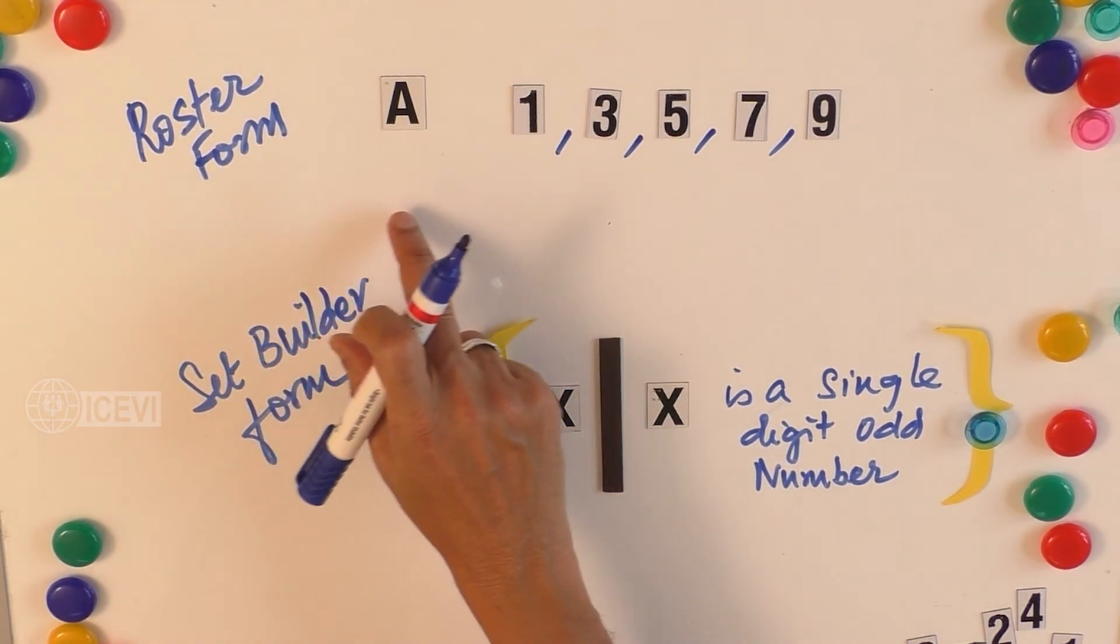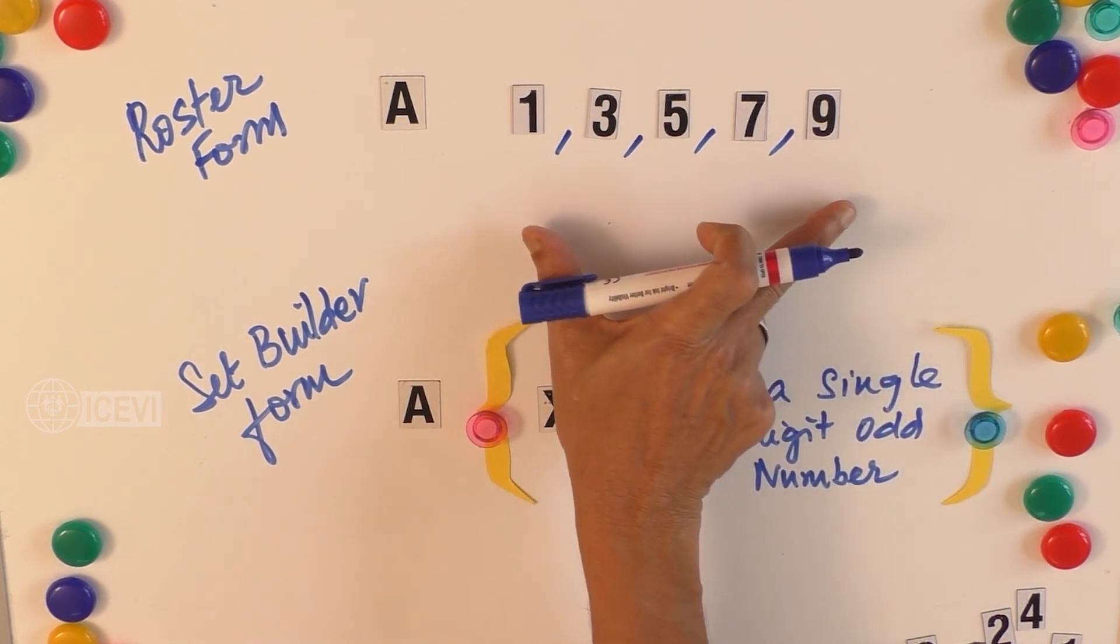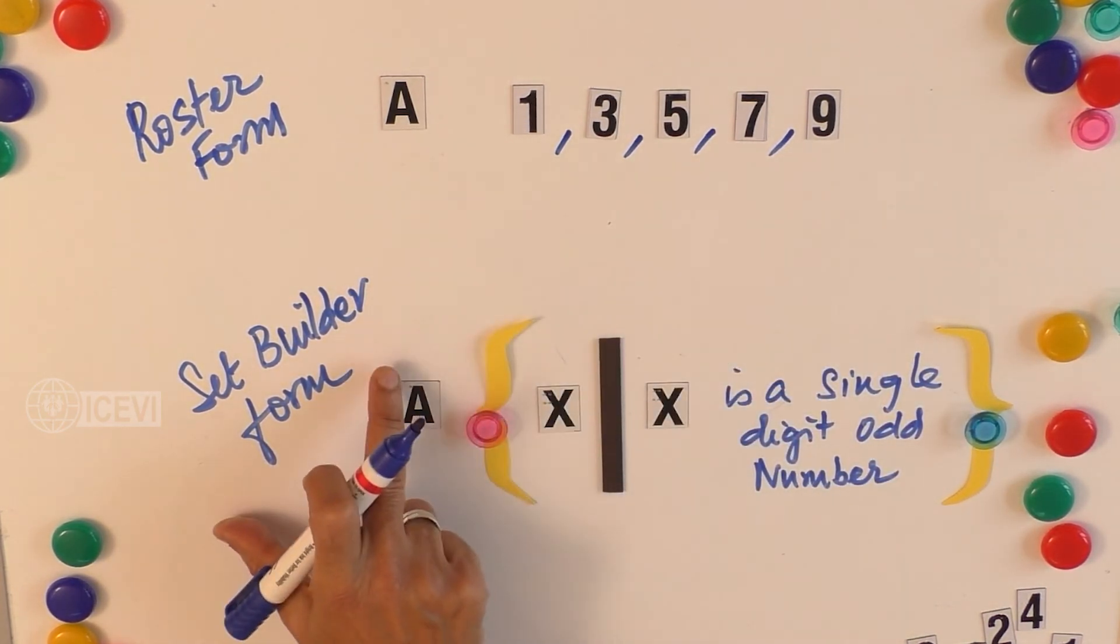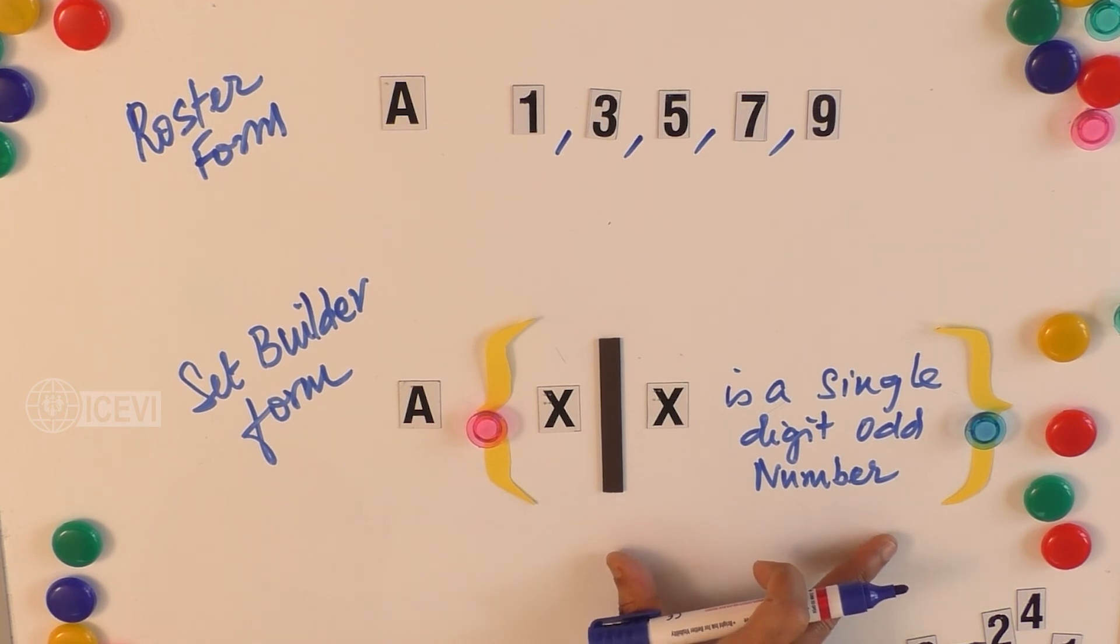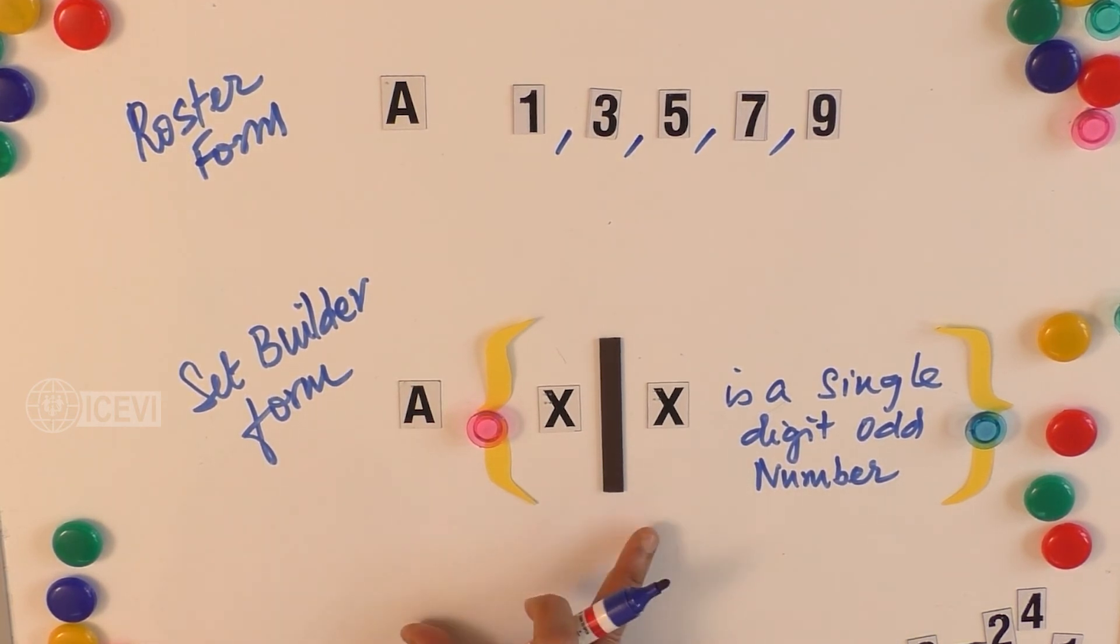So roster form is non-descriptive; it is presenting the full form. Whereas in the set builder form, it is a descriptive method because it is giving a description of the elements of the set which is stated.